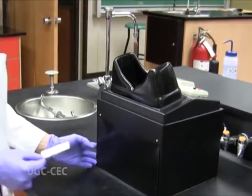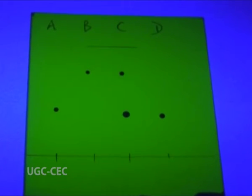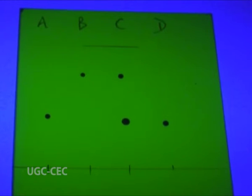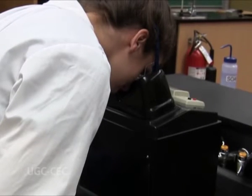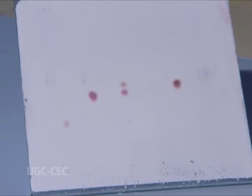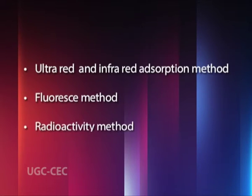If there are any coloured spots, circle them lightly with a pencil. Spots that are not coloured need to be visualized with a UV lamp. Hold a UV lamp over the plate and circle any spots you see. Be aware that UV light is damaging to both your eyes and skin — make sure you are wearing goggles and do not look directly into the lamp, and protect your skin by wearing gloves. For detection of amino acids, spray the plate with ninhydrin solution, which reacts with amino acids and amines to form a purple colour. Other methods of detection include ultraviolet and infrared adsorption, fluorescence method, and radioactive method.